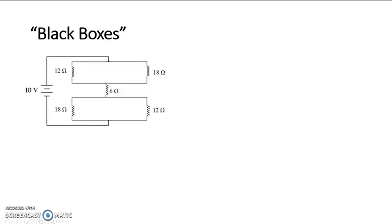Let's try it. Here's our black box method. This here, the 12 and the 18, looks very promising. I don't know what's going on in the rest of the circuit, but this 12 and this 18 are definitely in parallel. We can put them in a box.